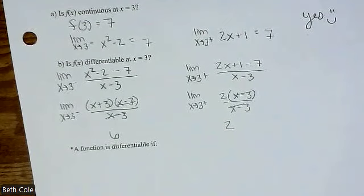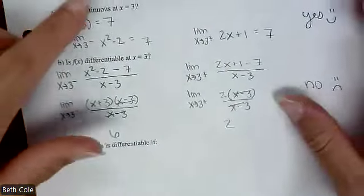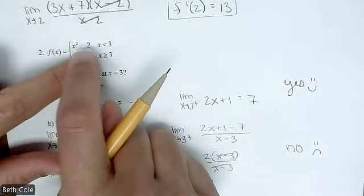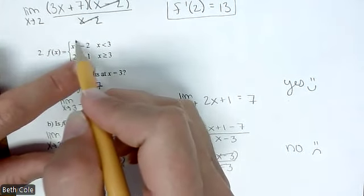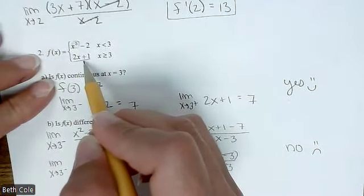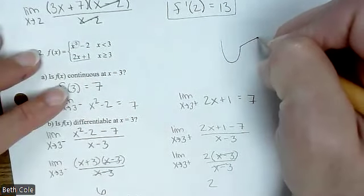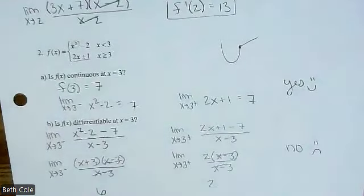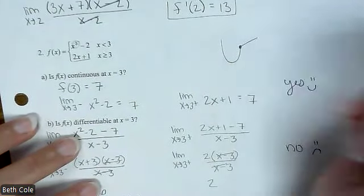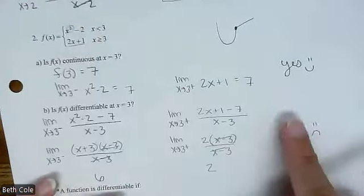So your slope from the left is 6, but your slope from the right is 2. So is the function differentiable at 3? No — they did not come out to the same thing. Here's a visual of what was going on: the first piece is a parabola (a u-shape), and then the second piece is linear, a line. They matched up, so it was continuous. But there's that sharp edge there — you can't get a derivative there. It's continuous, but it's not differentiable.